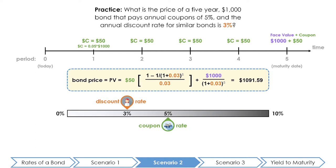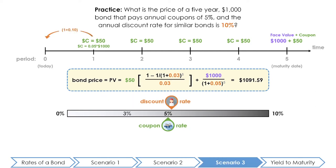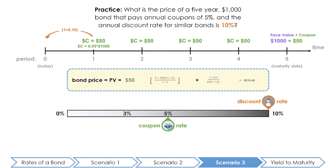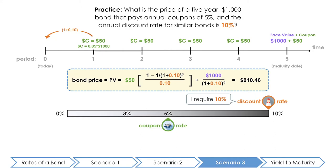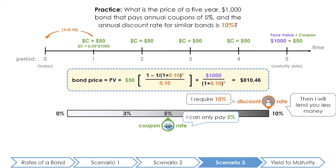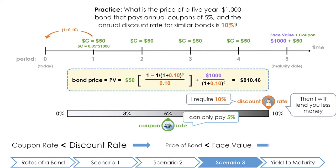Lastly, imagine that after the bond was issued the annual discount rate rose from five percent to ten percent. Using the bond valuation formula, the price of this bond is equal to $810.46, which is less than the principal of one thousand dollars. The bondholder requires a rate of return of ten percent on similar bonds, but this bond only pays coupons of five percent. Bondholders would only buy this bond if it sold for less than the principal. Thus when the coupon rate is less than the market discount rate, the bond sells at a discount, quoted at approximately 81.